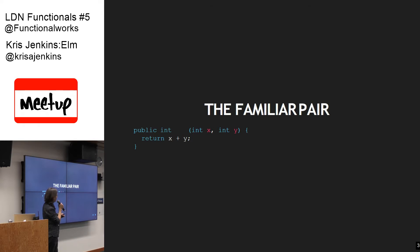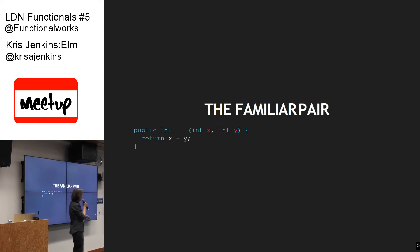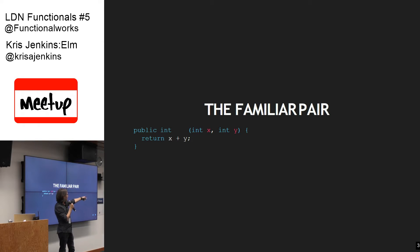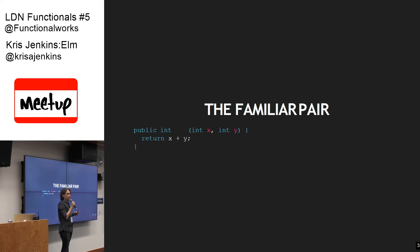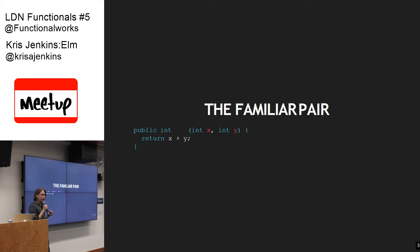Here's the familiar pair — this very ordinary function takes two integers and returns an integer. Nothing exciting about that, but that's the ordinary pair of inputs and outputs you're used to seeing. Let's have a look at the other pair of inputs and outputs you're not used to thinking about.